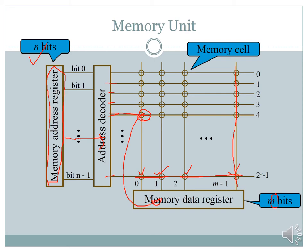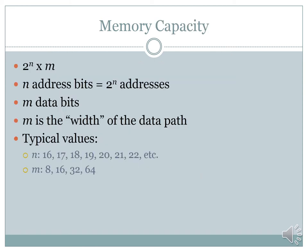The number of rows pointing to memory addresses is n, and to calculate the memory capacity you use 2 to the power m — where m is the width (number of address bits) — multiplied by the number of data bits. This gives you the capacity of your memory.